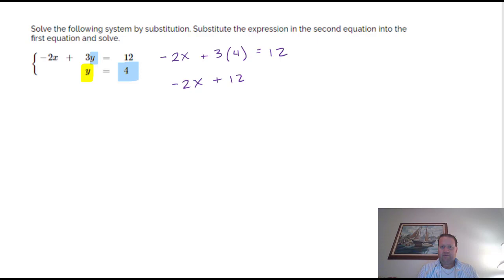And we get negative 2x plus 12 equals 12. And when we take away a 12 on both sides, I end up with 0 on the right. So don't lose the 0. X is going to be 0. We'll divide by a negative 2.